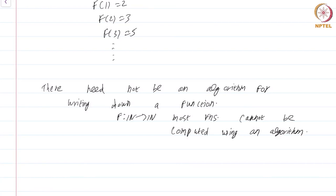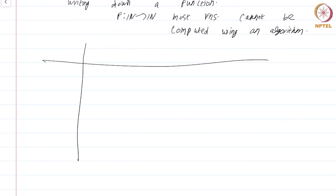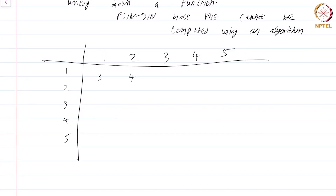The definition of a function should be well defined. Every function we consider in this course will obviously be well defined. You can also describe functions by a table. Suppose you have a finite set — say 1, 2, 3, 4, 5 — and you want to write down a function from that set to another, you can write it in tabular form. Let me define a function here: writing 3, 4, 6, 7, 8, 1, 5, 7, 8, 9, 2, 3, 6, 4, 1, 7, 8, 4, 5 as entries.